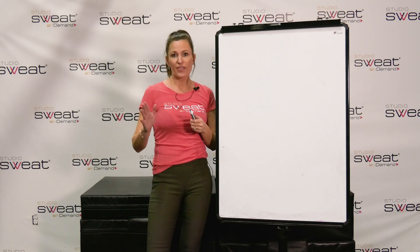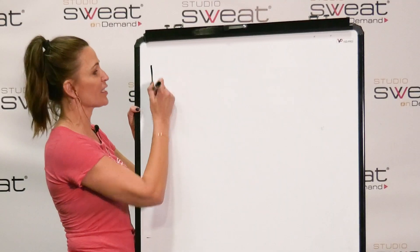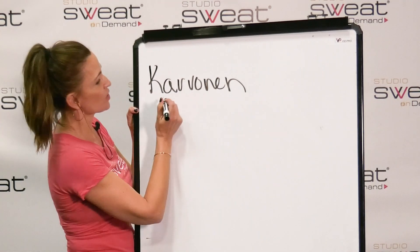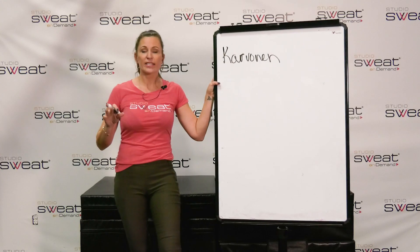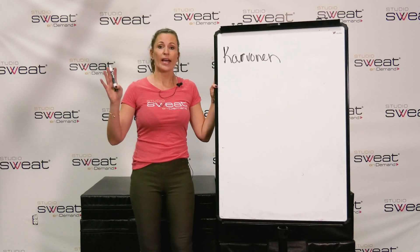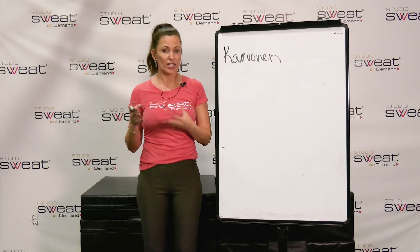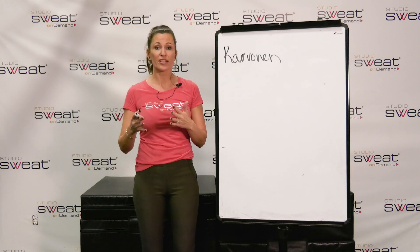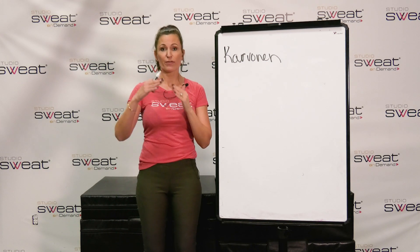There is something out there called the Karvonen formula — that's spelled with a K. My suggestion to you is that you Google 'Karvonen calculator.' It's very simple to understand how to use it. It's going to ask you a couple of questions and spit out your max heart rate, and some of them will even spit out your different zones.